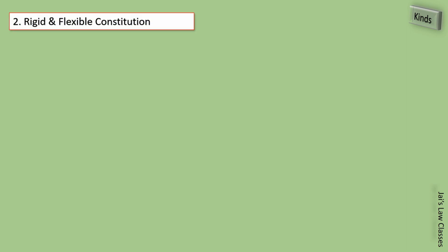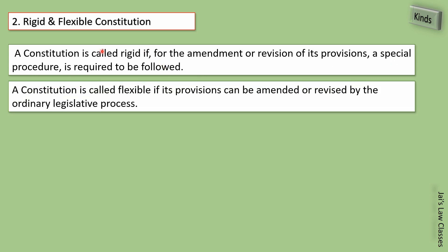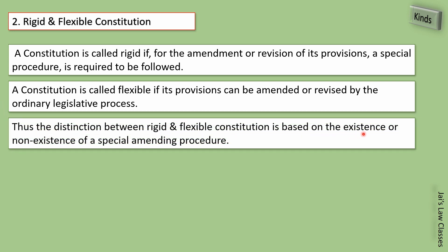Now let's cover rigid and flexible constitution. A constitution is called rigid if a special procedure is required to amend or revise its provisions. On the other hand, a constitution is called flexible if its provisions can be amended or revised by ordinary legislative procedure. As the word suggests, rigid means strict — amending it is very difficult. Flexible means it can be amended easily by simple means.